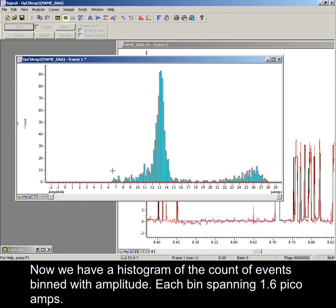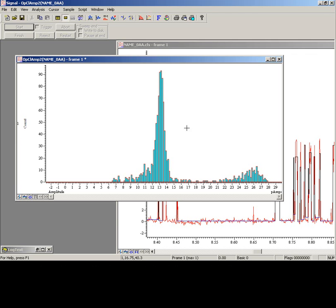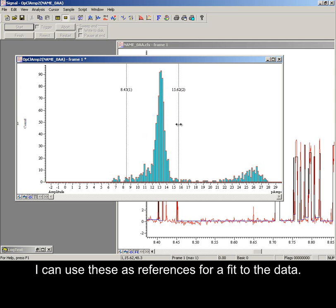Now we have a histogram of the count of events, binned with amplitude, each bin spanning 1.6 picoamps. Adding two vertical cursors now, I can use these as references for a fit to the data.